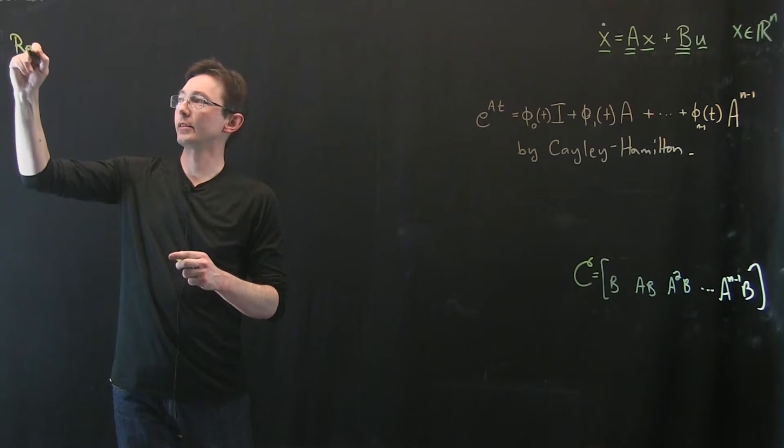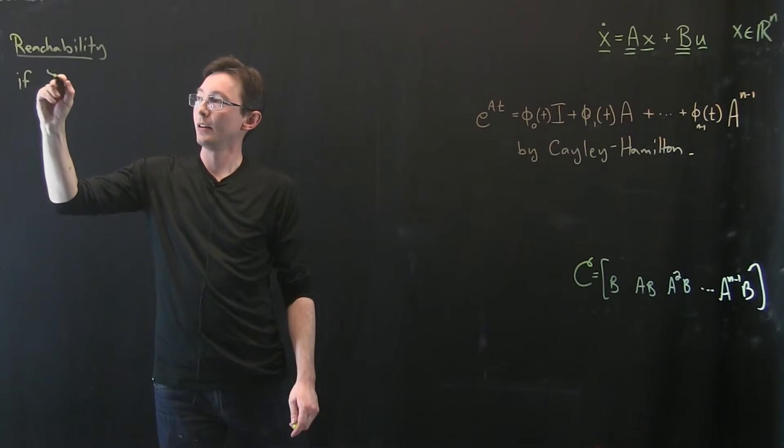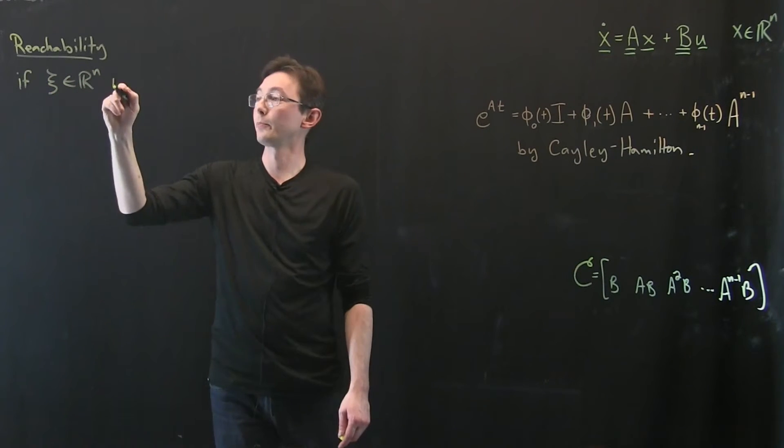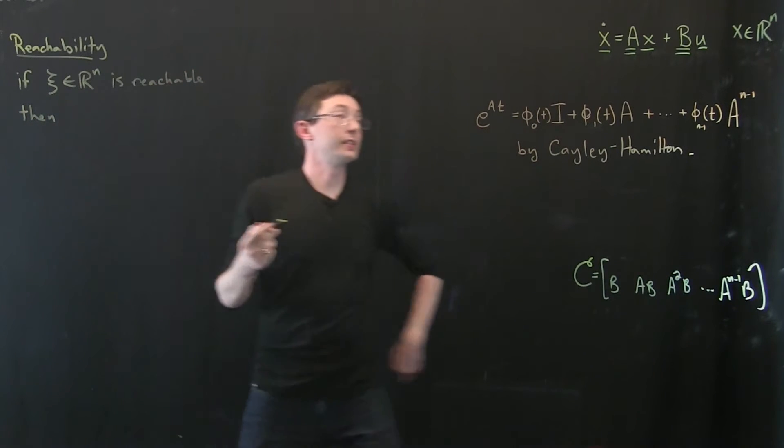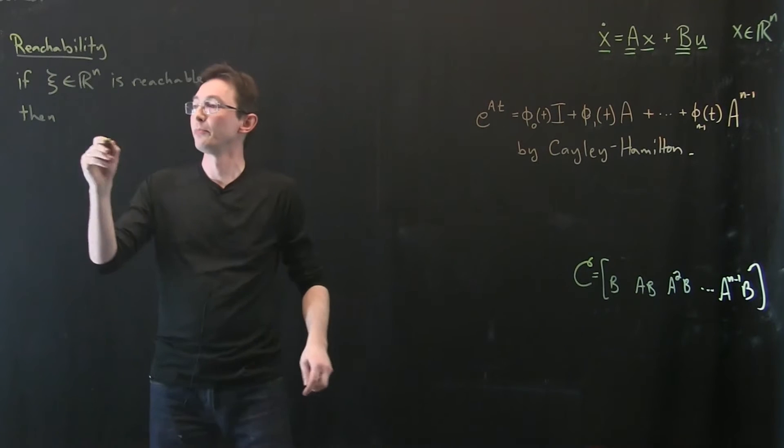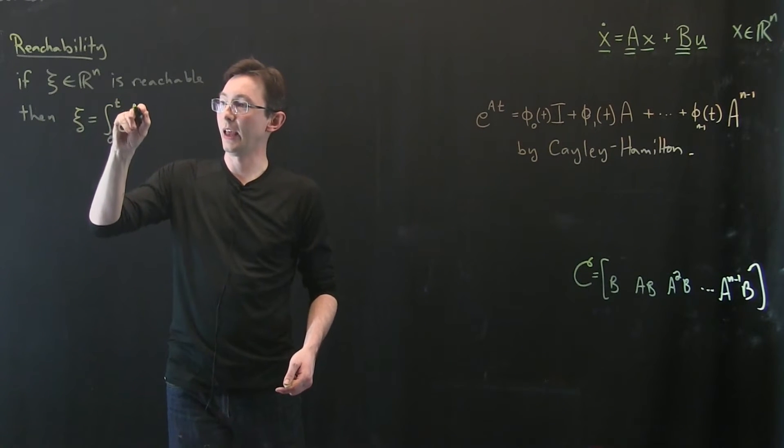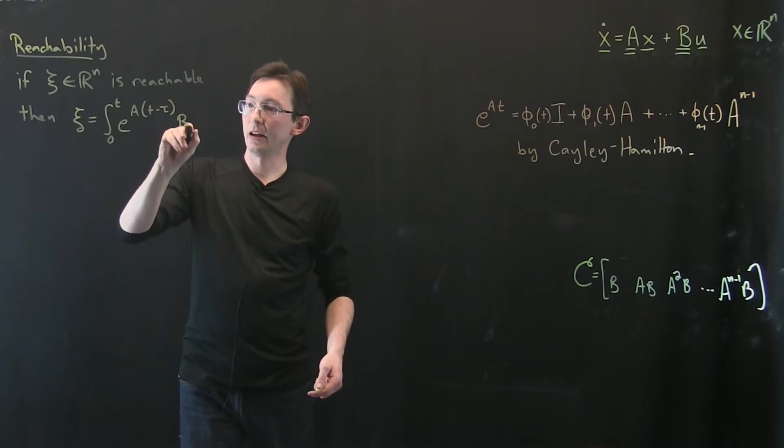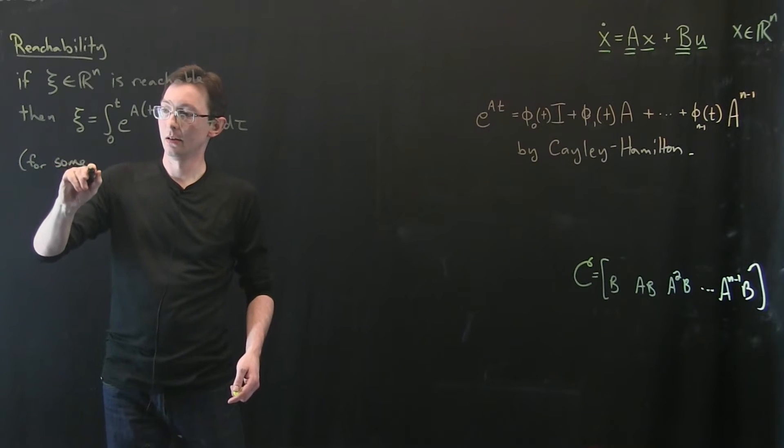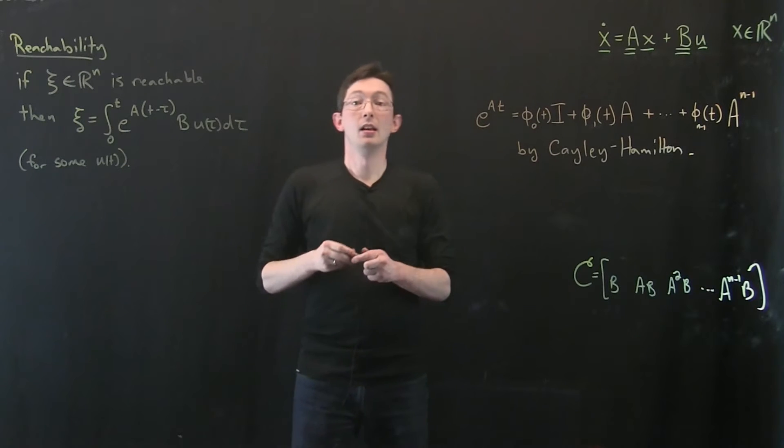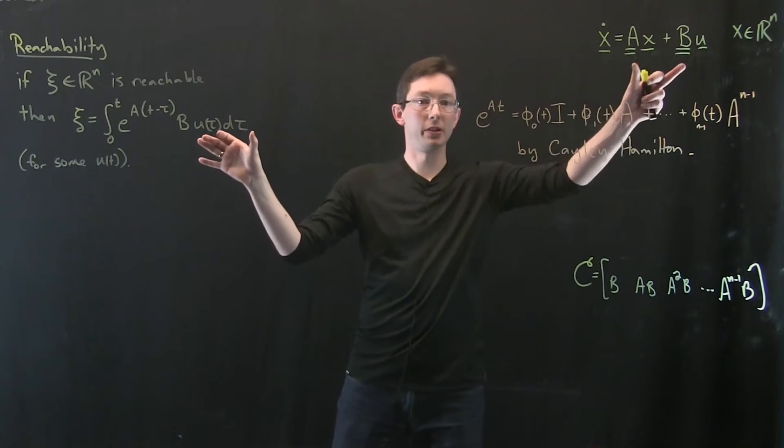Okay, so remember if we have reachability, that condition essentially says that if some vector C in R^n is reachable, then that means there is some prescribed control input u that will give me C. So C will equal this integral from 0 to T of e^(a(T-τ)) times b times u(τ) dτ. And this is for some u(t). Now I'm not going to tell you what u(t) is, but if a state is reachable, then there is some u so that C will equal this integral, because this is the solution of my system with 0 initial conditions.